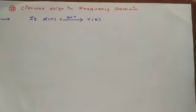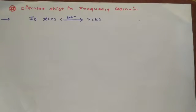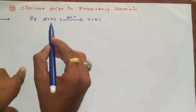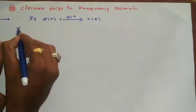Hello everyone and welcome to our channel. In this segment we are going to discuss two important properties of the Discrete Fourier Transform. We will first discuss the circular shift property in the frequency domain. If you remember, in the previous video we discussed the circular shift of a sequence in the time domain, whose exact reverse property will be in the frequency domain. So we have an input sequence x of n whose DFT is X of k.